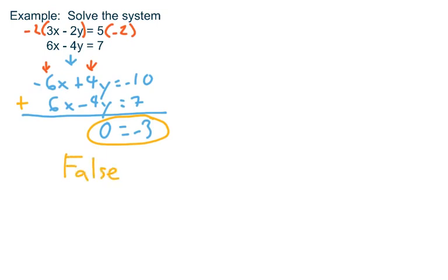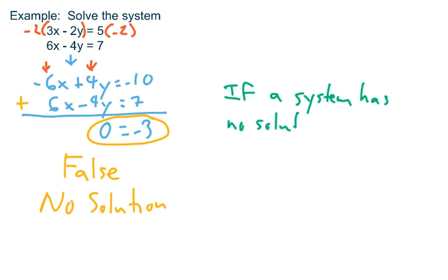If all of your variable terms add out to 0 and you end up with a false statement, what that means is that this system of equations has no solution, which is very interesting. A system that has no solutions, we're going to call inconsistent. If a system has no solutions, we call the system inconsistent.